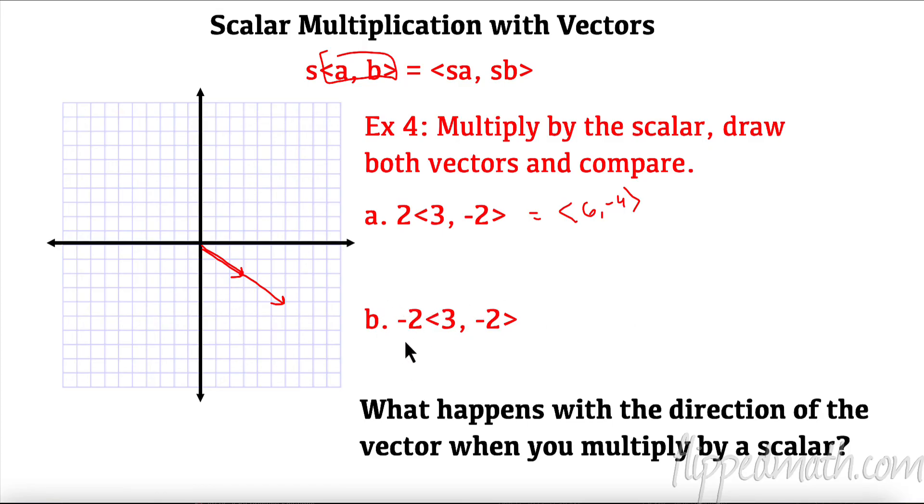Now let's multiply by a negative scalar. Let's see what happens here. Now we have negative 6, positive 4, negative 6, 1, 2, 3, 4, 5, 6, 1, 2, 3, 4. So this is where the head of my vector is. When I multiply by a negative scalar, it goes in the opposite direction. So what happens with the direction when we multiply by a scalar? Well, if it's a positive scalar, it's going to go in the same direction. Positive scalar, same direction. But if it's a negative scalar, it's going to go in the opposite direction. That's pretty cool. 180 degrees, opposite direction.